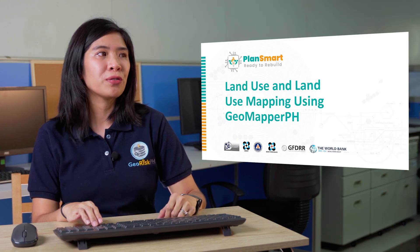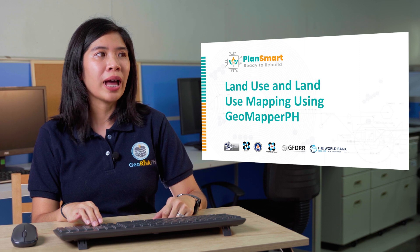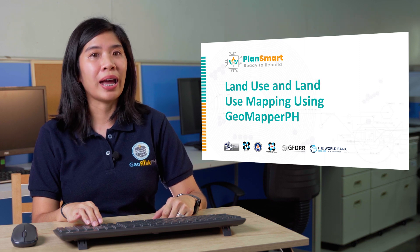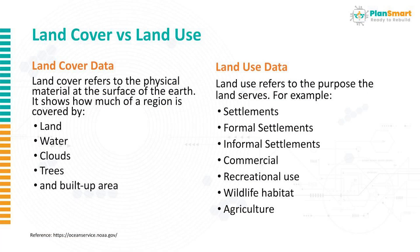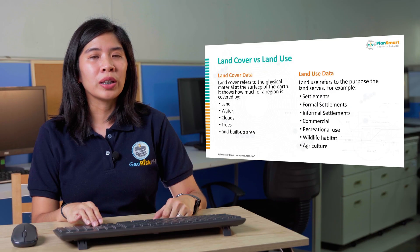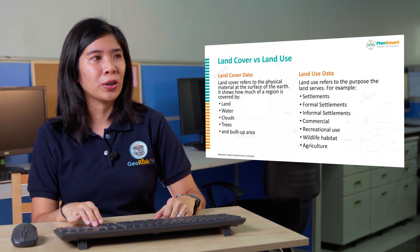So what is the difference between land cover and land use? Land cover data refers to how much of a region is covered by land, water, clouds, trees, and built-up areas. It shows the physical surface that you can see on the surface of the earth.